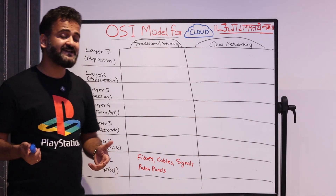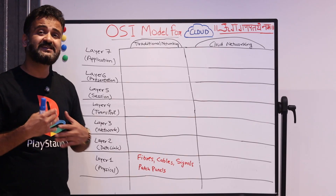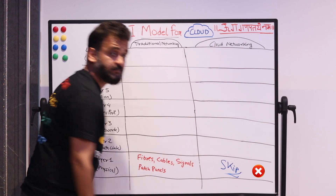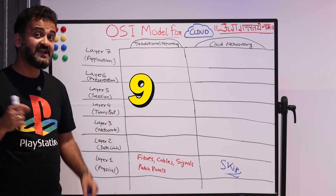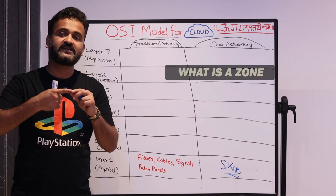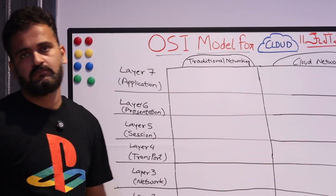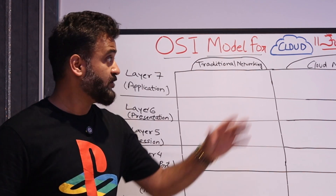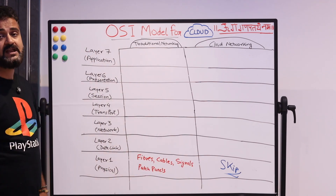Layer 1 is the physical layer. In CCNA, you spend substantial time learning about fibers, cables, signal attenuation, and patch panels — all hardware-side networking. But in cloud, you don't need this at all. Amazon, Microsoft, and Google maintain their own infrastructure and deliver 99.99% uptime. You need to understand constructs like zones and regions, but not what's happening behind the scenes at the hardware level. Don't spend too much time on layer 1 when focusing on cloud.